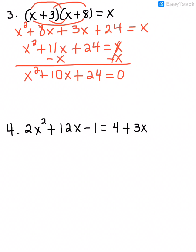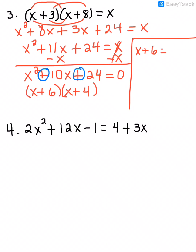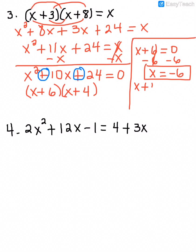Now let's factor. This is a trinomial — there's not a greatest common factor, and trinomials factor into two binomials. The second sign tells me my signs are the same, and they're both plus. The factors of 24 that add to give me 10 are 6 and 4. I take each factor and set it equal to 0. So x plus 6 equals 0 gives me x equals negative 6, and x plus 4 equals 0 — subtract 4 — gives x equals negative 4 as my other solution.